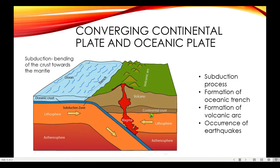What will happen if a continental plate and an oceanic plate converge or collide? This event gives rise to the formation of a volcanic arc near the edge of the continental leading plate. The reason is because the denser oceanic crust undergoes the subduction process, or the bending of the crust toward the mantle. Since the mantle is hotter than the crust, the subducted crust melts, forming magma. The addition of volatile material such as water will cause the magma to become less dense, allowing it to rise and reach the crust, causing volcanic activities on the continental leading plate.